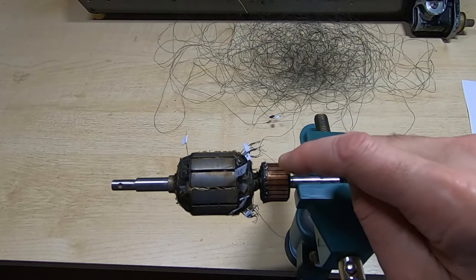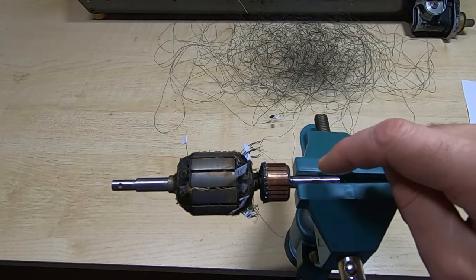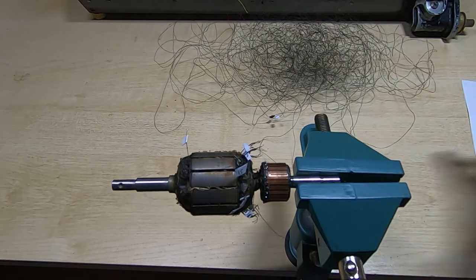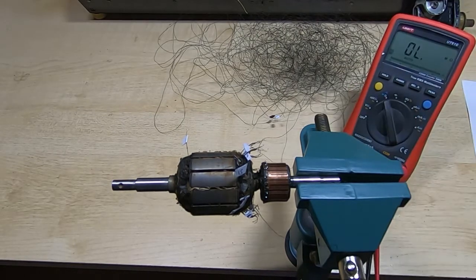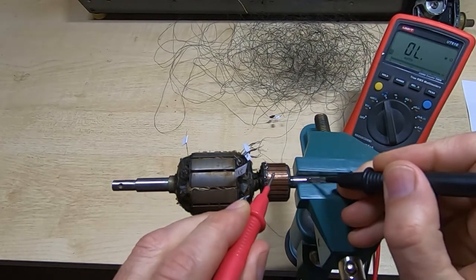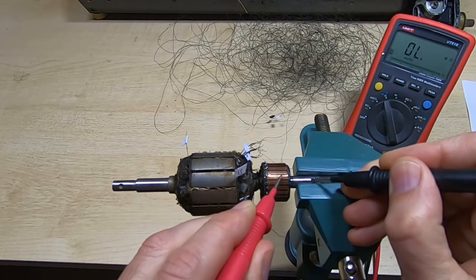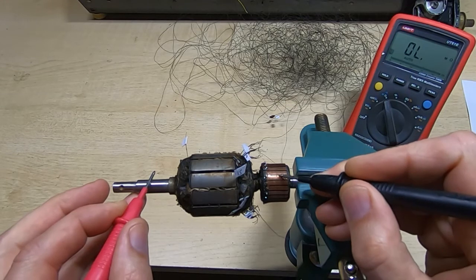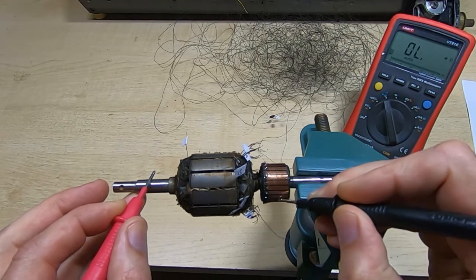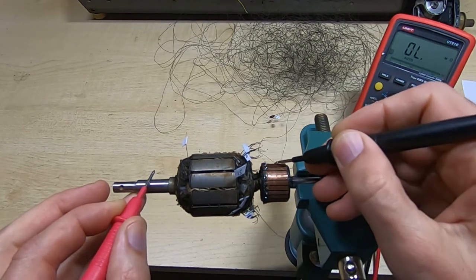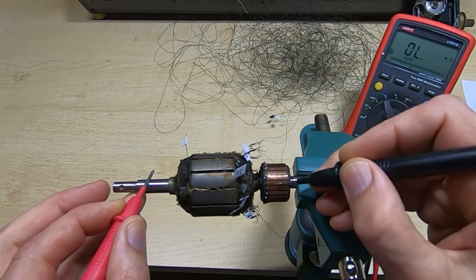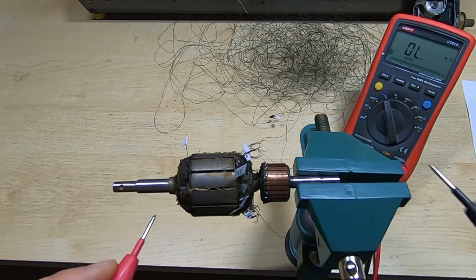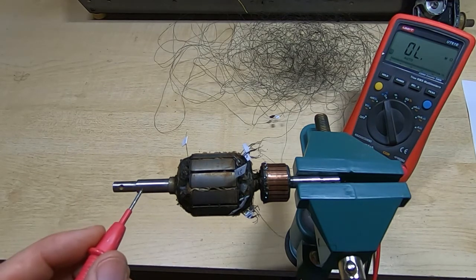Hopefully we'll end up with a working motor. Just a quick test before I finish this video, I want to measure between the commutator and the shaft to see if we have any leakage. So I'll bring in the meter, and we'll measure between here and the shaft. As you can see, we're getting nothing at all, which is what we would expect. We'll do a full high voltage test on this once I've got all the windings removed.